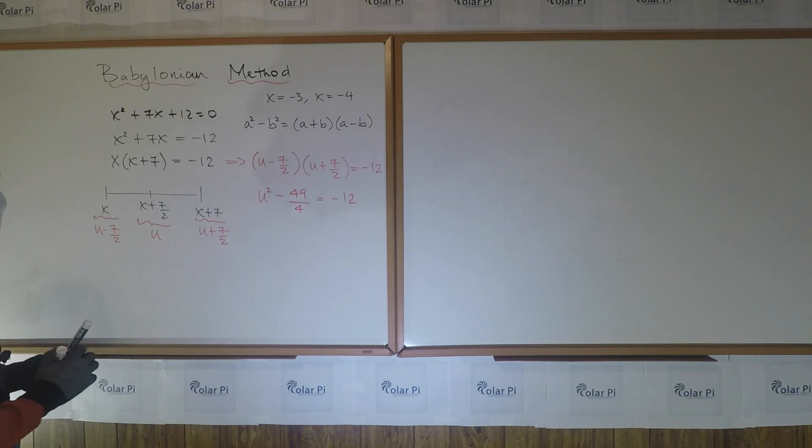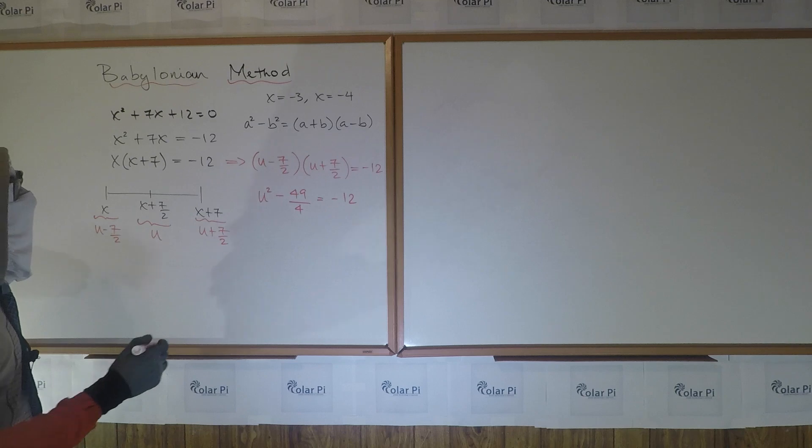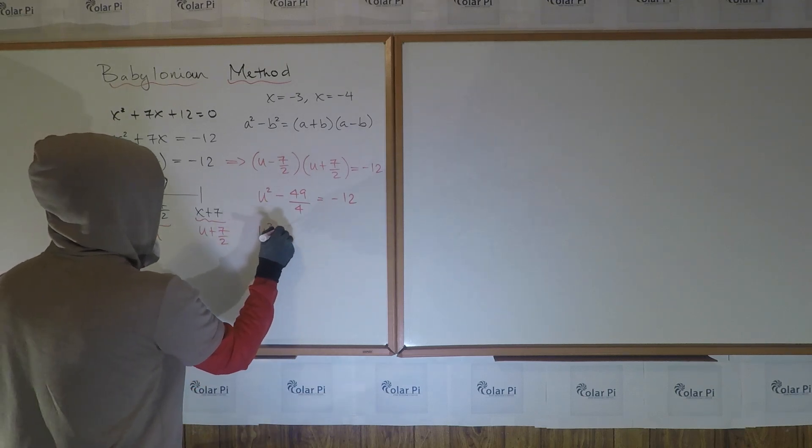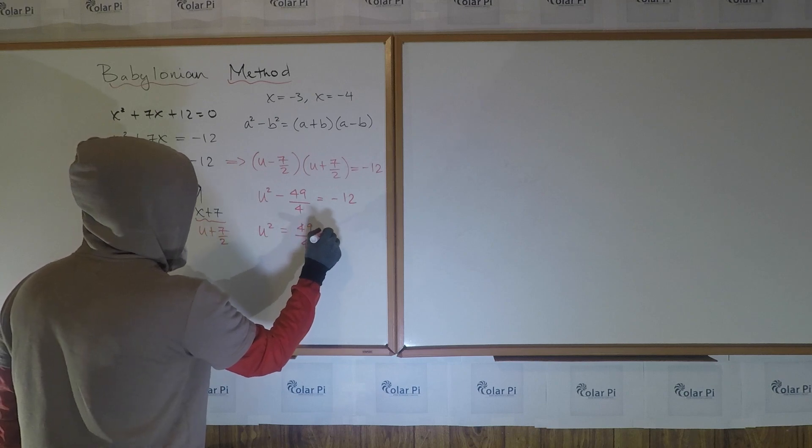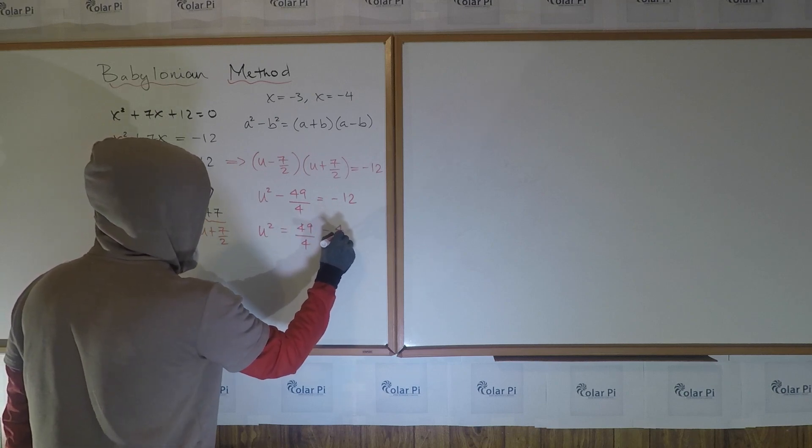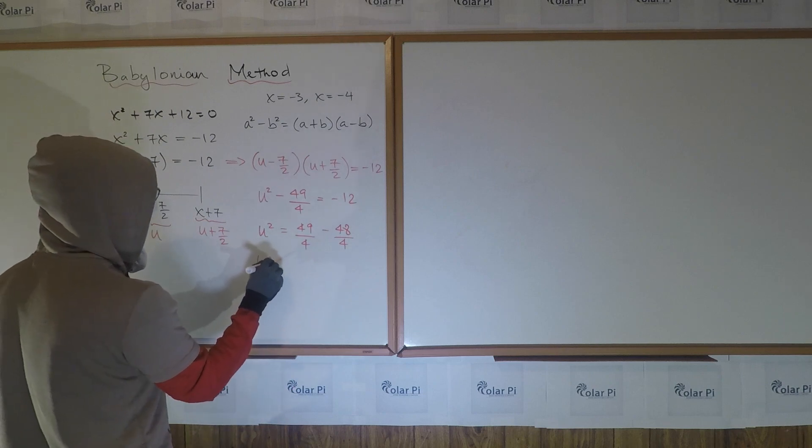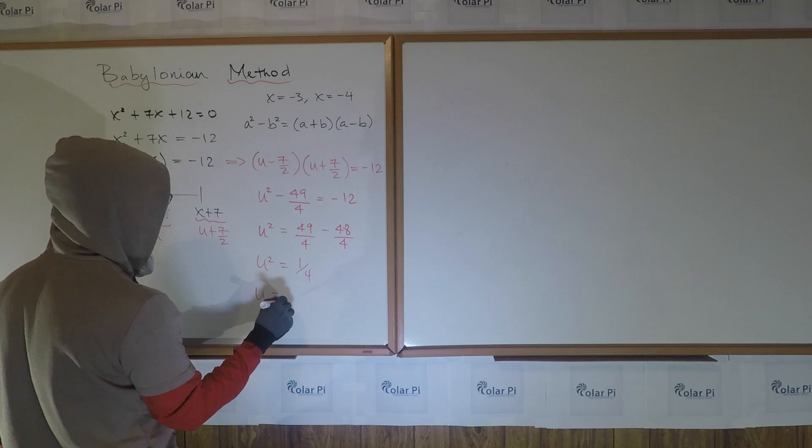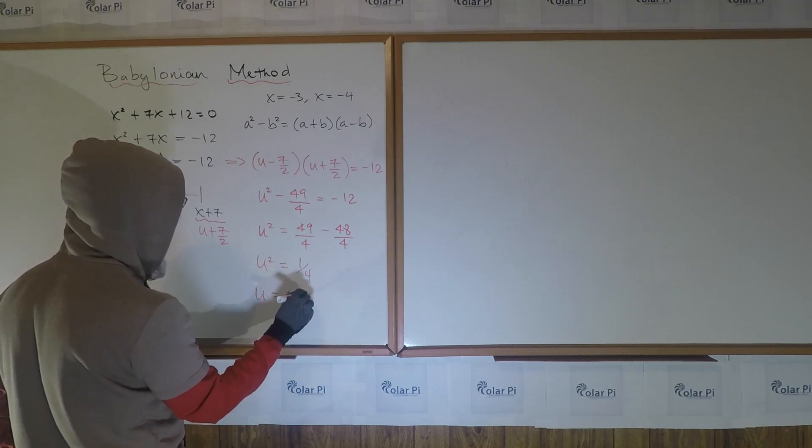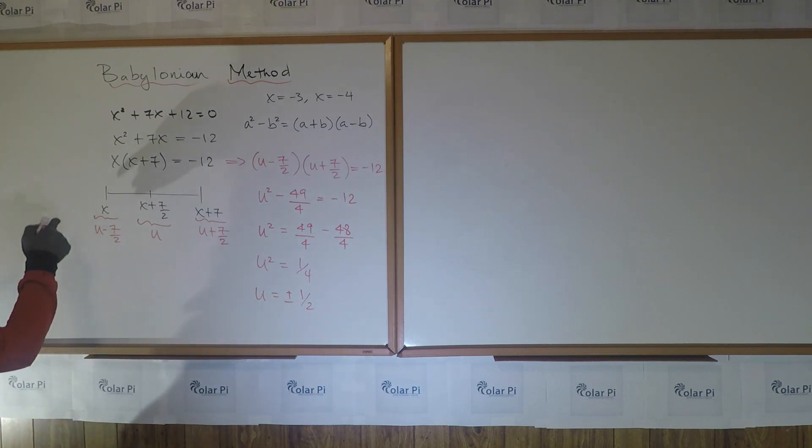Okay? Cool? And then, after this step, the name of the game is solve for u. So that means that we write u² = 49/4 - 12, which is 48/4. So that means u² = 1/4, from which we gather that u has got to be plus or minus the square root of 1/4, which is ±1/2. Okay, we're done solving for u, but what we want to solve for is x.